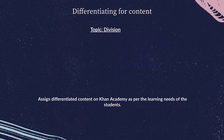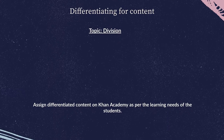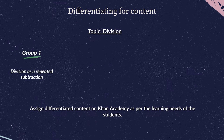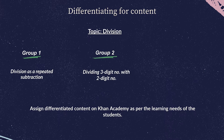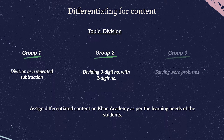Let's see how you can differentiate for content with an example. Let's say students in your class are working on division. However, based on students' scores on Khan Academy, you notice that some students need to spend more time understanding division as a process of repeated subtraction, while others need to work on dividing three-digit numbers by two-digit numbers. Alternatively, you may also have a group of students who need to work on solving word problems based on division, as their real struggle is comprehension.